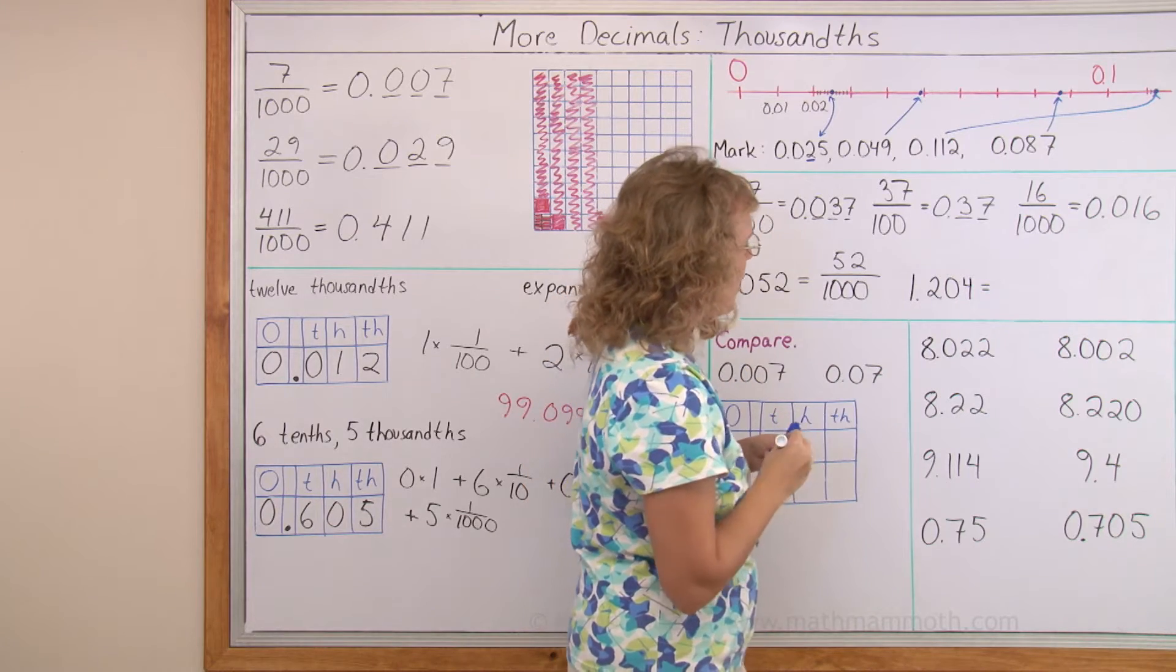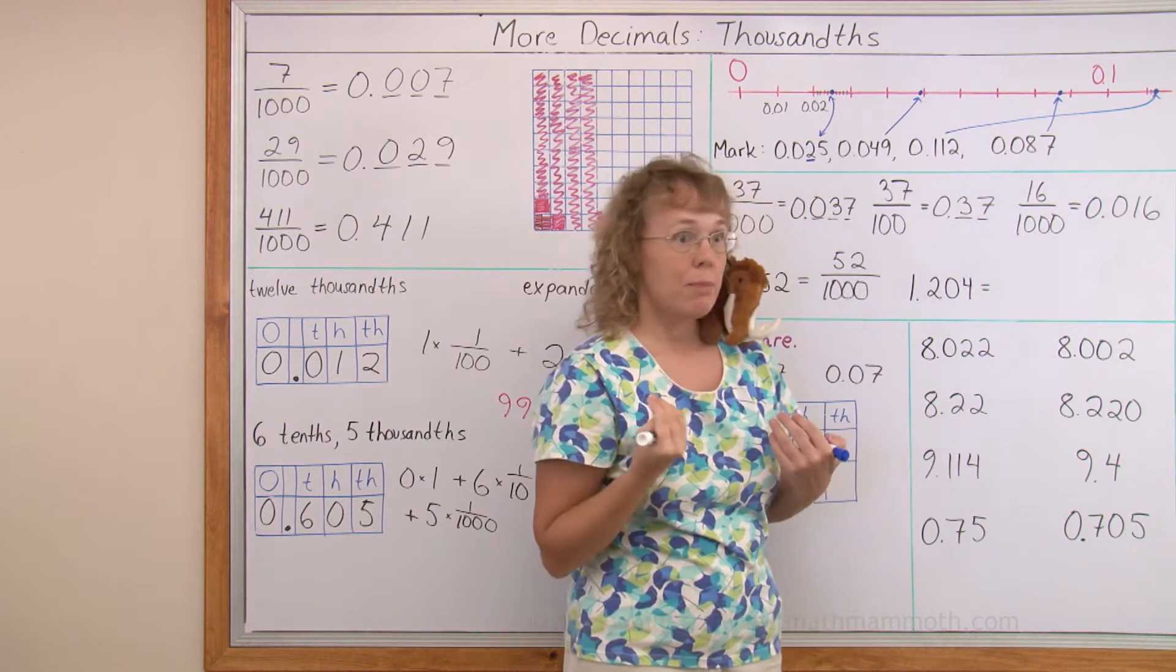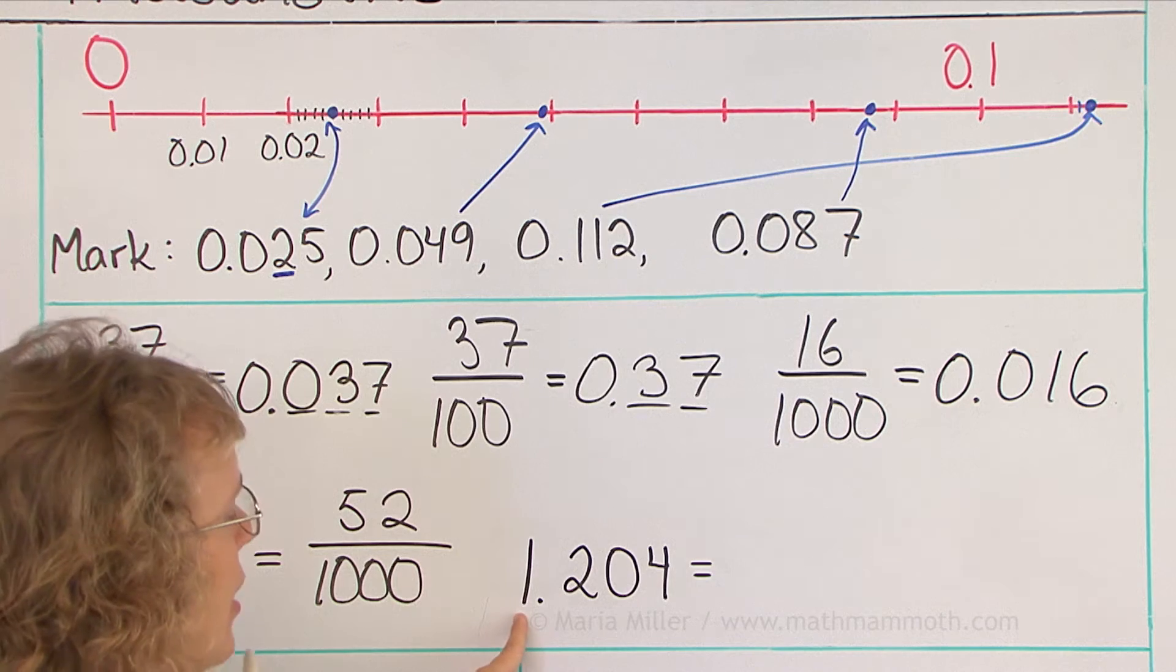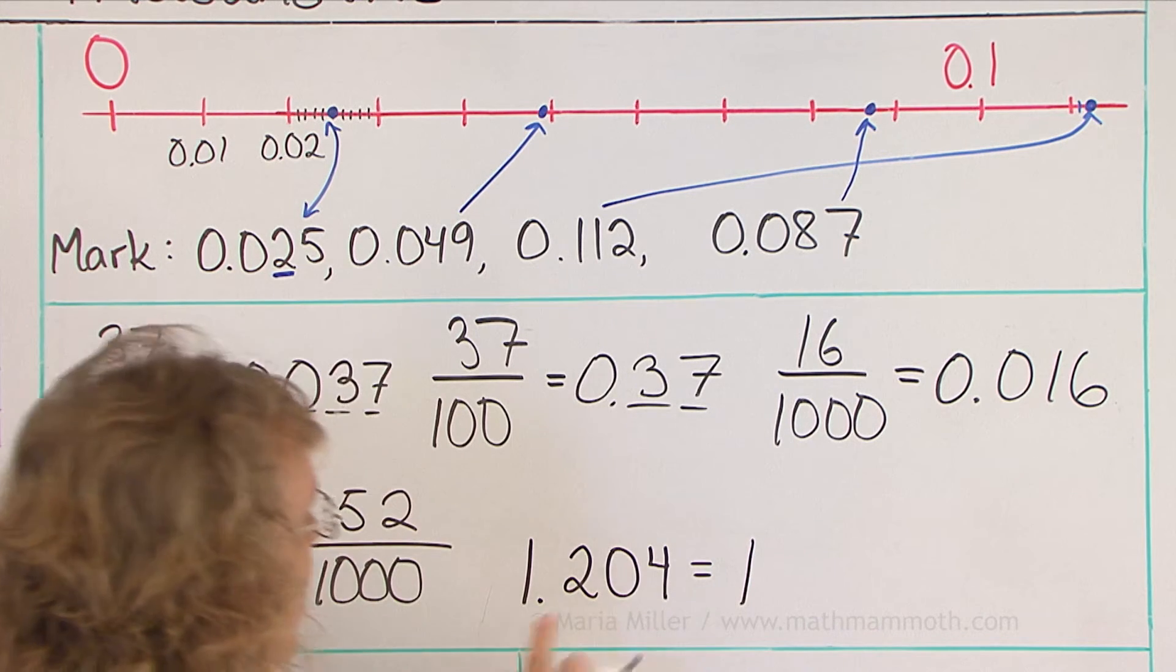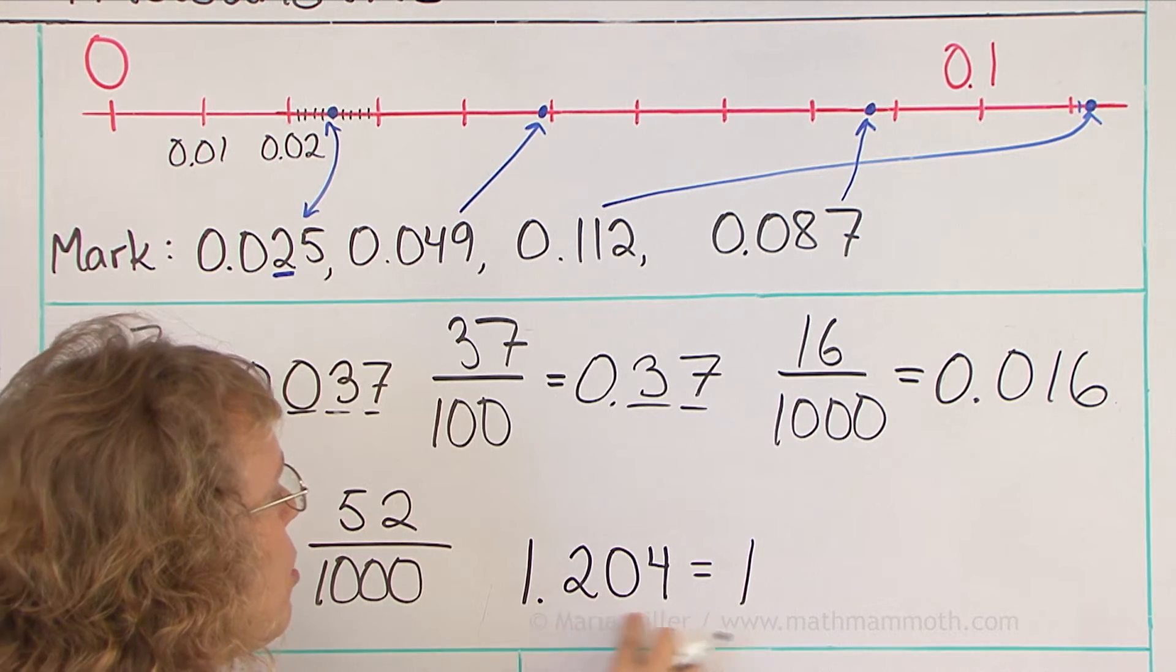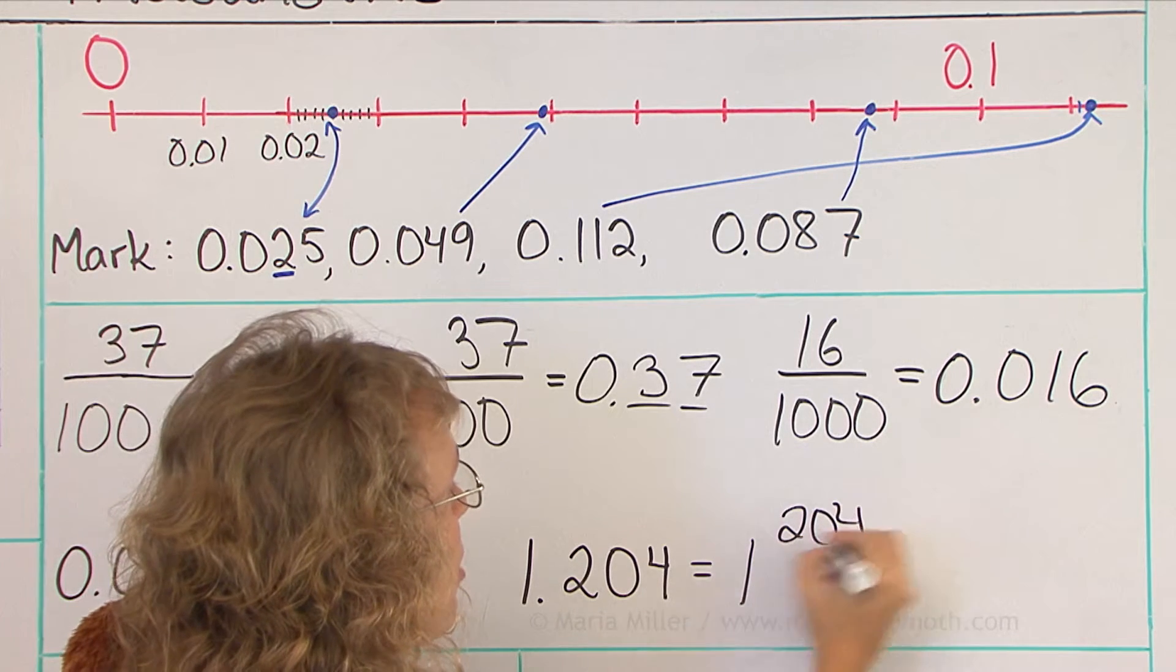This last one, we can write it as a mixed number or as a fraction. As a mixed number, it has 1 here, so I would have 1 as my whole number part. Then 2, 0, 4, 204 thousandths, right?